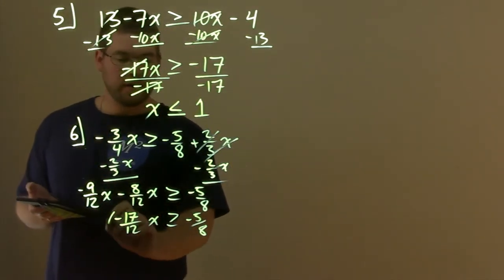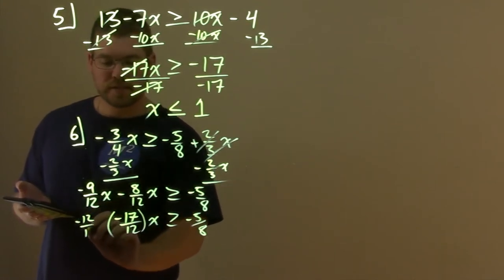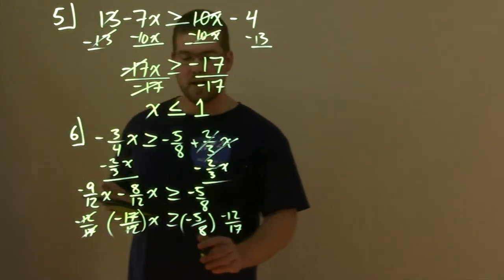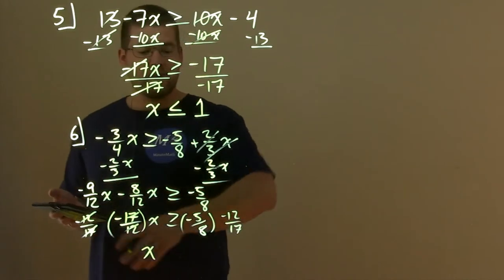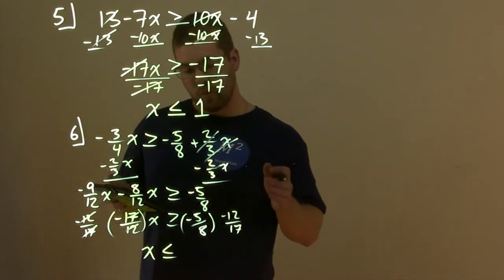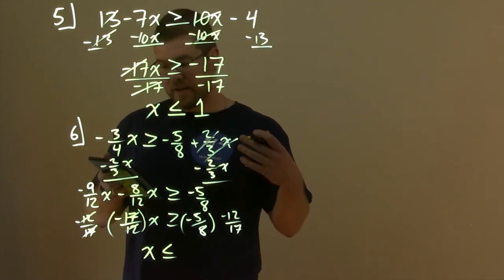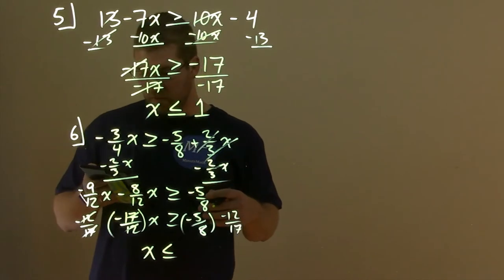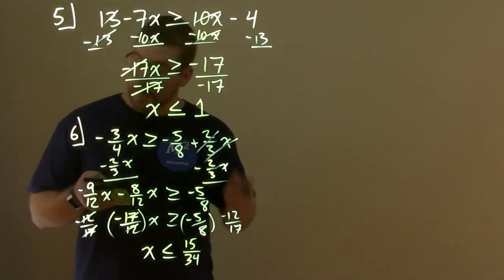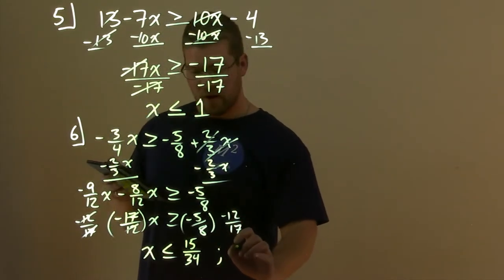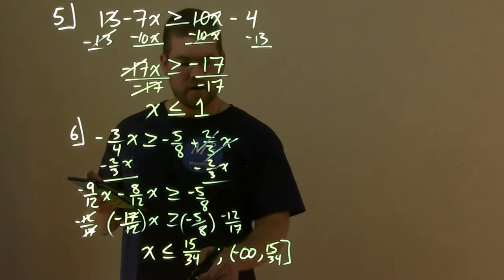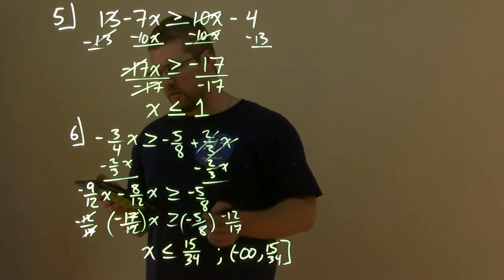Well, what we can do now is multiply both sides by a negative 12 over 17 here. And what that does, it eliminates the negative 17 over 12 on the left-hand side, giving x by itself. Notice, again, we multiply it by a negative number over the inequality. Inequality flip sign. So, it's now less than or equal to a negative 5 eighths times a negative 12 over 17. Two negatives make a positive. Multiply that up and simplify that. So, we can write this here as 15 over 34 when it's simplified. And I did forget to write this in interval notation. That's what they want us to write it as, as well. So, it's negative infinity comma 15 over 34. And there's a bracket there because they equal that number. But it's 15 over 34 and then down through to negative infinity.